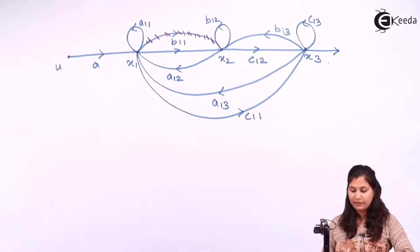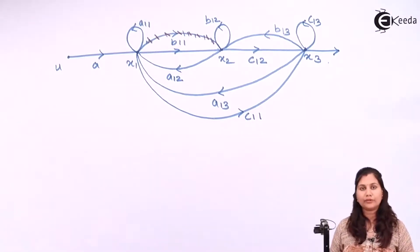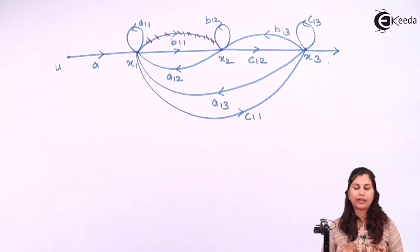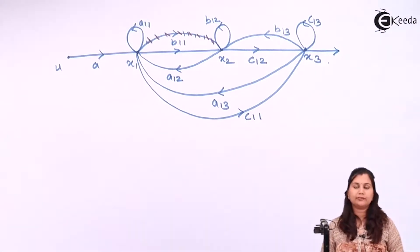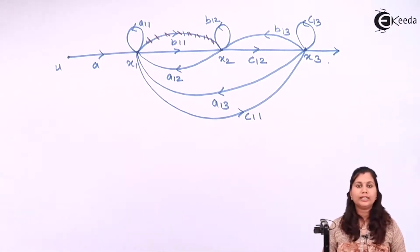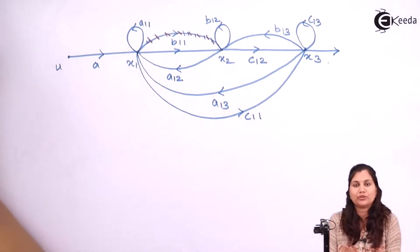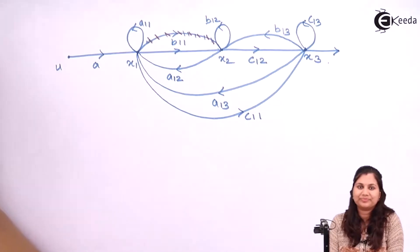This is the complete signal flow graph of the system. We have drawn the signal flow graph for each equation and then combined all three to obtain the signal flow graph for the complete system. I hope you have understood the problem clearly. Thank you.